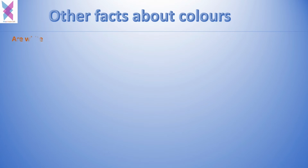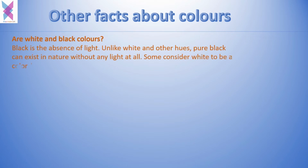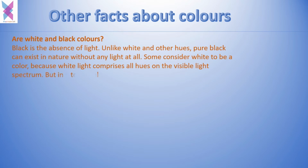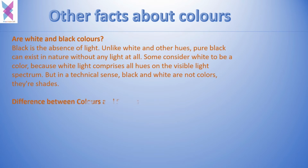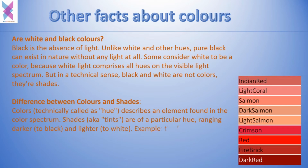Black is the absence of light. Unlike white and other hues, pure black can exist in nature without any light at all. Some consider white to be a color because white light comprises all hues on the visible light spectrum. But in a technical sense, black and white are not colors — they are shades. Colors, technically known as hue, describe an element found in the color spectrum, whereas shades, also known as tints, range from darker to black and lighter to white.